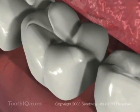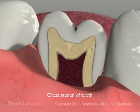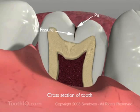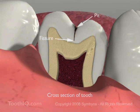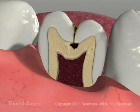Deep pits and fissures are the source of some 80% of tooth cavities. This is mainly because food and bacterial plaque lodge in these tight crevices and are often inaccessible to toothbrush bristles. Plaque acids and enzymes at the base of these grooves cause the tooth enamel to dissolve, eventually leading to cavities.